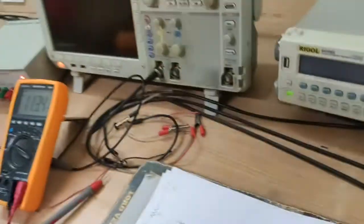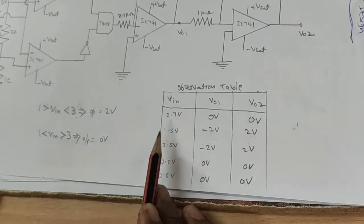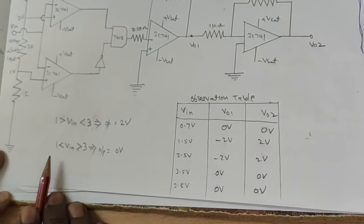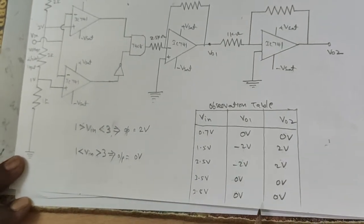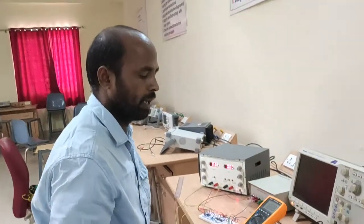Just observe this condition. When V in value is between 1 to 3 volts, the output is 2 volts. When V in value is less than 1 volt or greater than 3 volts, the output is 0 volts. This is the uniform quantizer, 1-bit quantizer.